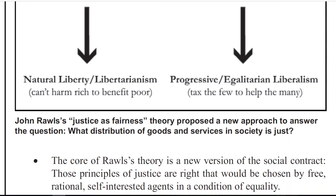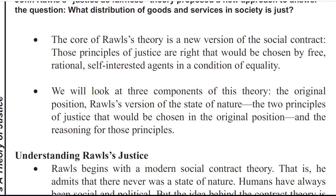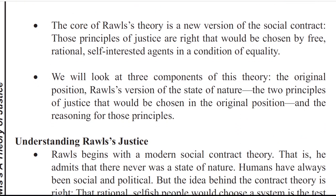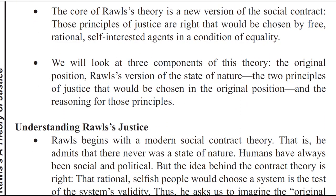John Rawls' justice as fairness theory proposes a new approach to answer the question: what distribution of goods and services in society is just? The core of Rawls' theory is a new version of the social contract. Those principles of justice are right that will be chosen by free, rational, self-interested agents in a condition of equality.